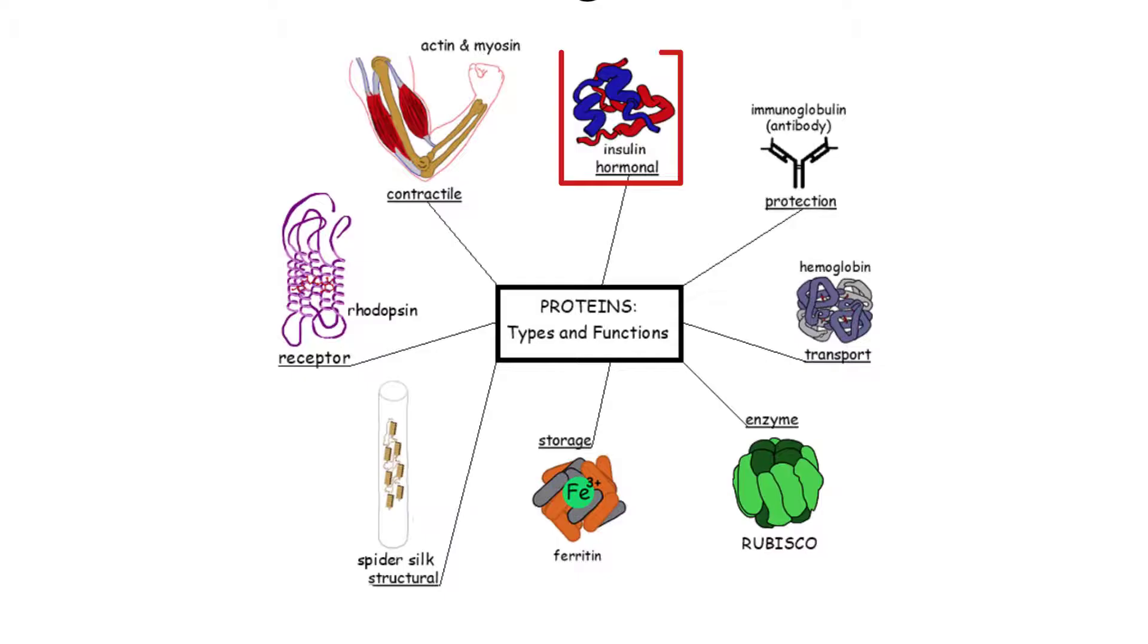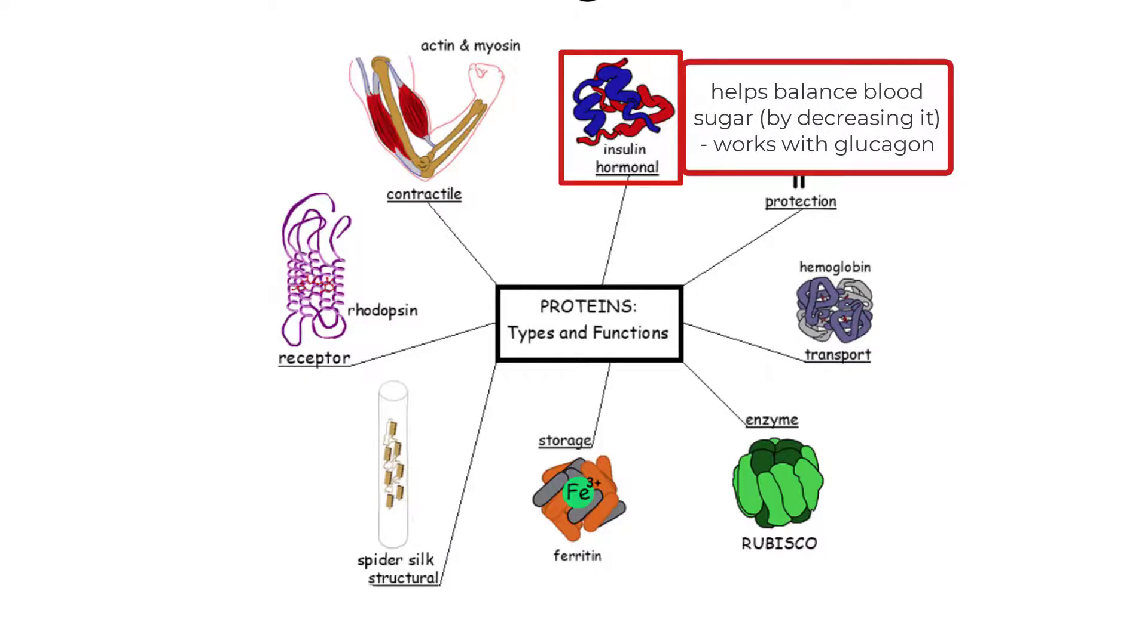First, we have insulin, which is a very important hormone that helps balance your blood sugar. Insulin specifically sends signals to your body to lower your blood sugar and works in opposition to another hormone called glucagon that signals for your body to raise your blood sugar levels. These two proteins working together ensure that your blood sugar remains at a relatively stable level.